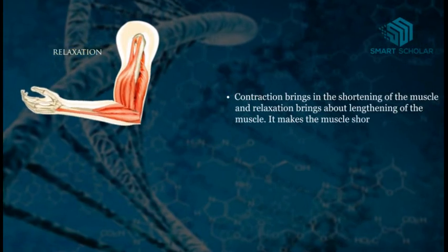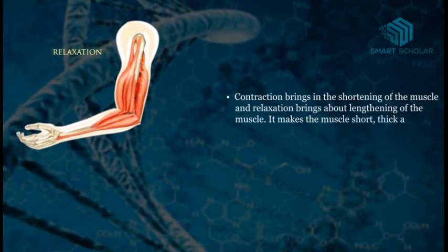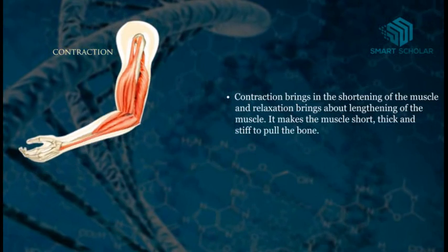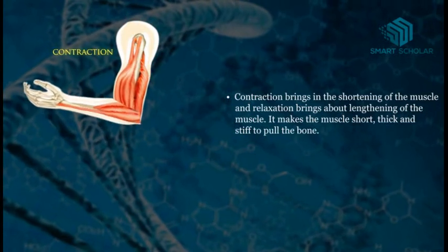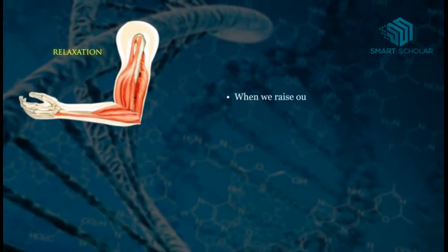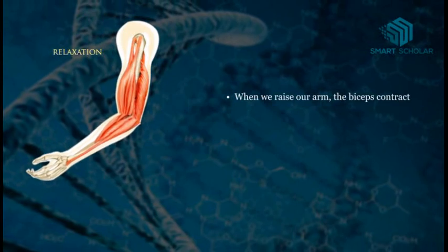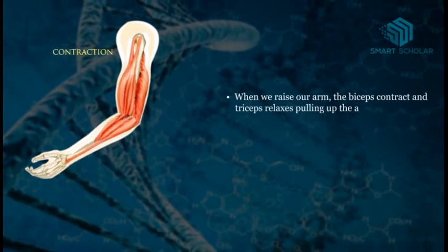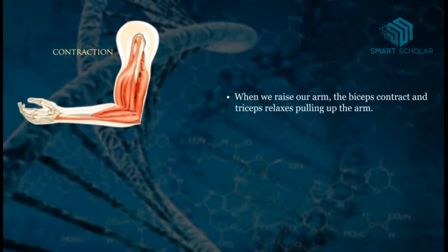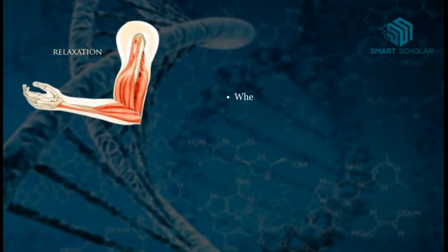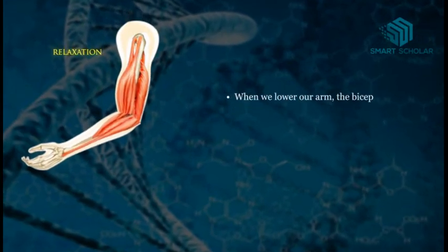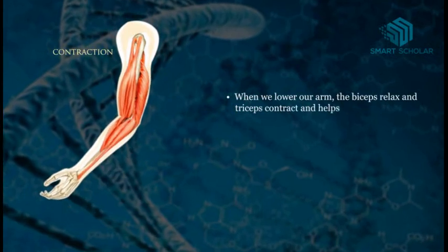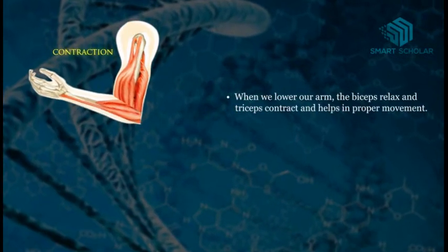Contraction makes the muscle short, thick, and stiff to pull the bone. When we raise our arm, the biceps contract and triceps relax, pulling up the arm. When we lower our arm, the biceps relax and triceps contract, helping in proper movement.